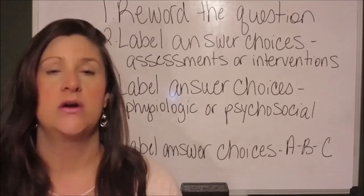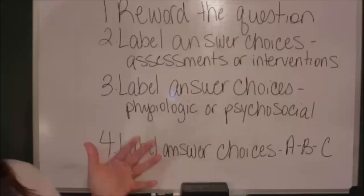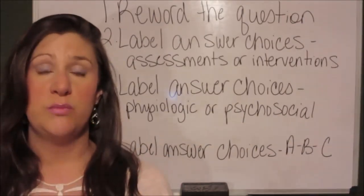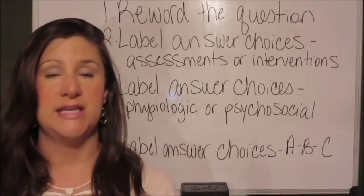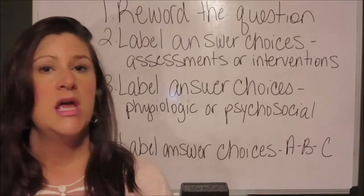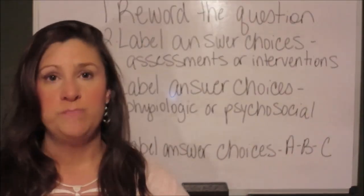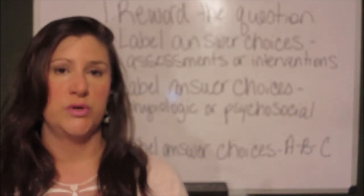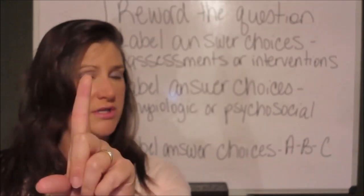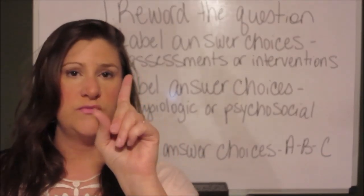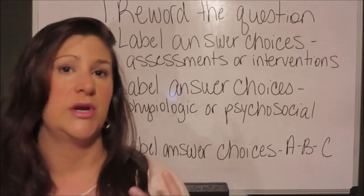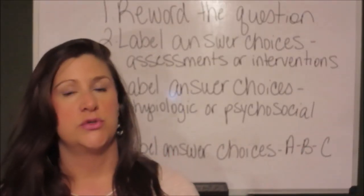Label your answer choices as assessments or interventions. As you know, there are several steps in the nursing process — and assessment is the first step. Once you have your answer choices labeled, if you have a mix of both — say 2 assessments and 2 interventions — look at the assessment answer choices first. Assessment is the first step in the nursing process, so assessments are the first things you want to try to eliminate as the correct answer choice. Look at those assessment answer choices very closely.